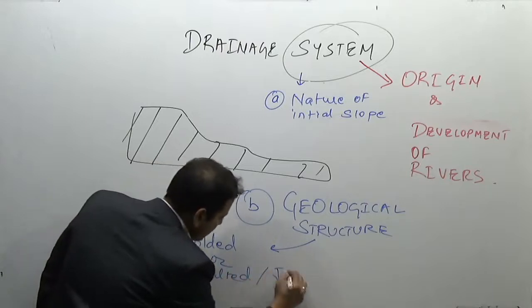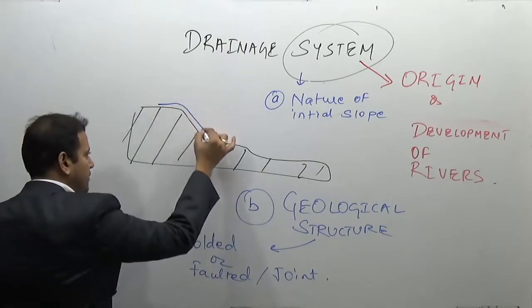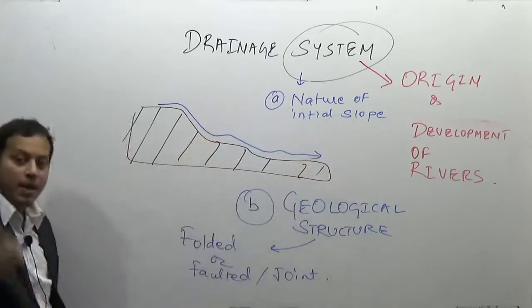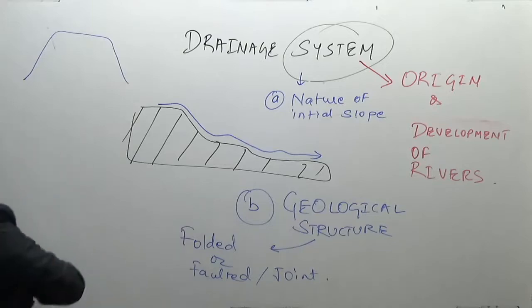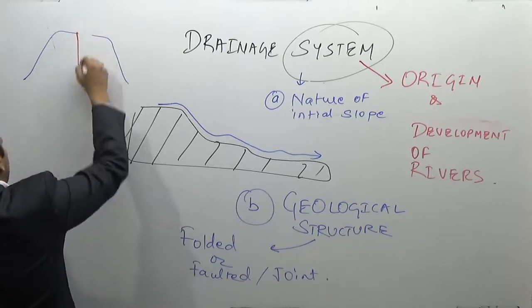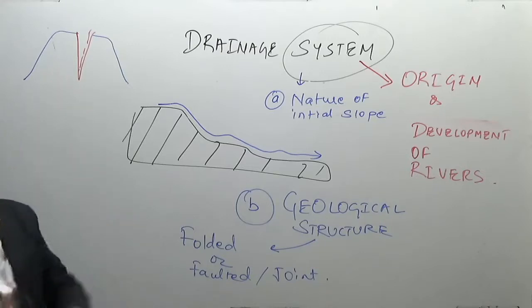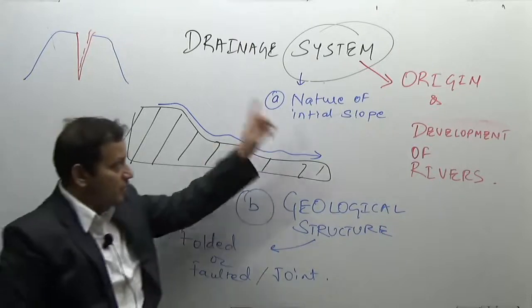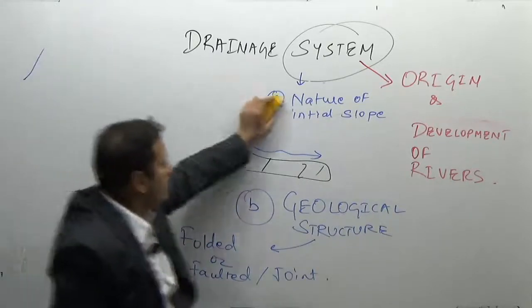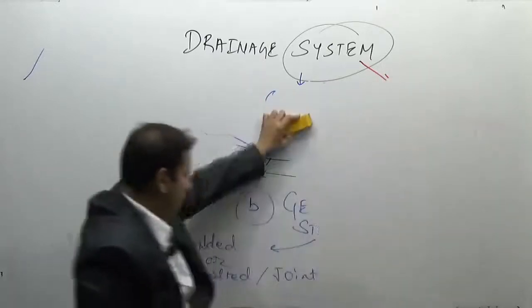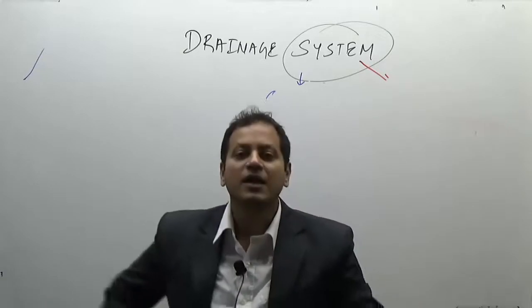The geological structure includes whether the area has folded, faulted, or jointed rock systems. A river originating in a mountainous region may cut through a valley and maintain its original force. So drainage system — referring to origin and development of rivers — depends on the nature of the initial slope and the geological structure. Drainage systems can be classified into those that follow the original slope of the land and those that do not.